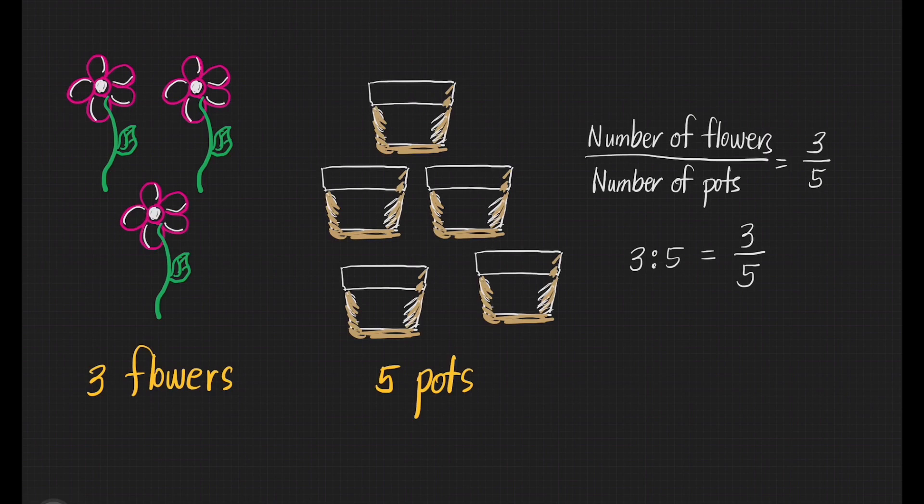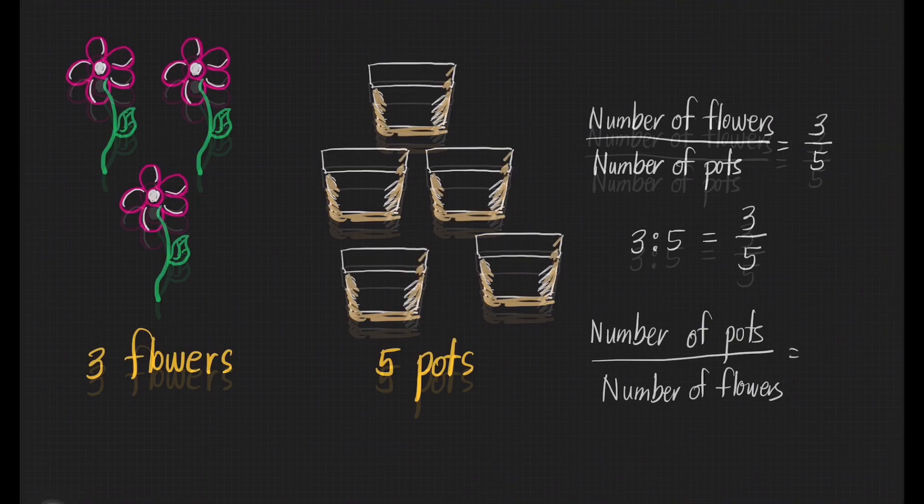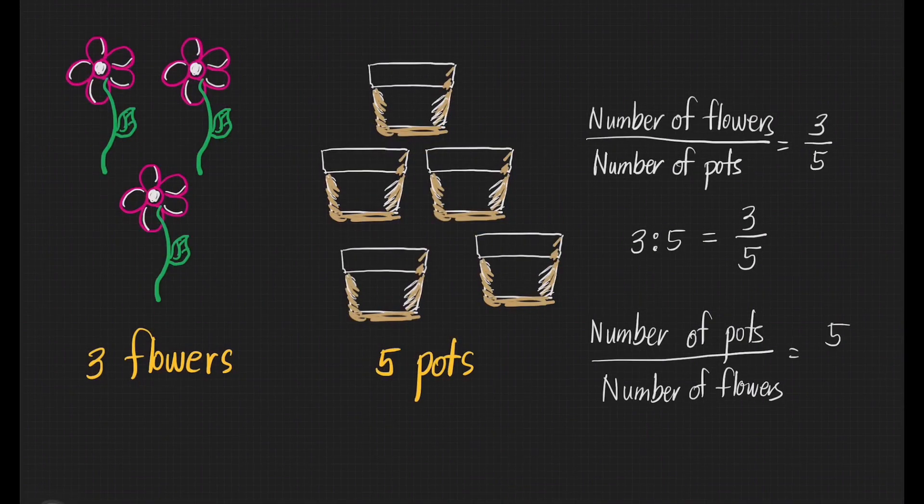Remember that the order in which a ratio is expressed is important. The quantity which is mentioned first in the ratio must be written in the numerator of the fraction. Therefore, we can say that the ratio of the number of pots to the number of flowers is 5 is to 3.